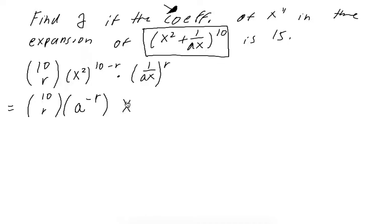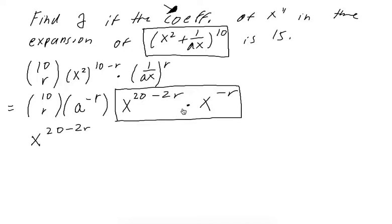So we have x, we can distribute the 10 minus r. So we have x to the 20 minus 2r times x to the negative r. And this is the part that we're actually going to be interested in. So we have x to the 20 minus 2r, and then we can add it, so we have negative r equals x to the 11th.